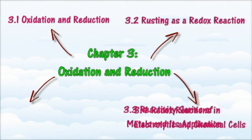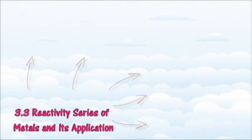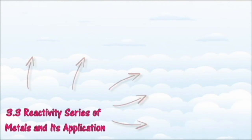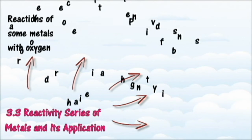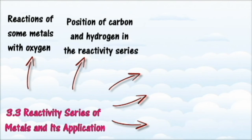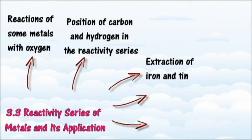You should also be able to describe efforts to prevent corrosion of metals. In Section 3.3 we will learn about the reactivity series of metals and its application. At the end of this section you should be able to compare the differences in the vigor of reactions of some metals with oxygen, deduce the reactivity series of metals, determine the position of carbon and hydrogen in the reactivity series of metals, and state what the reactivity series of metals are.